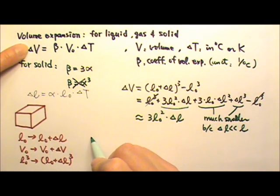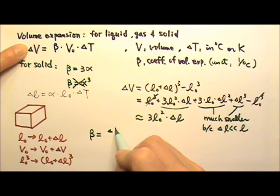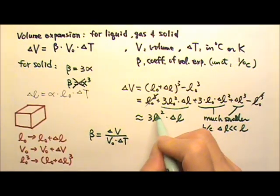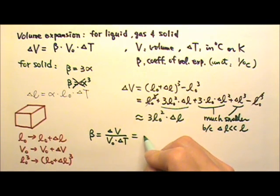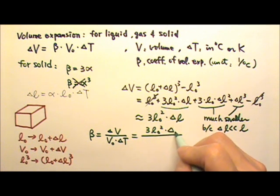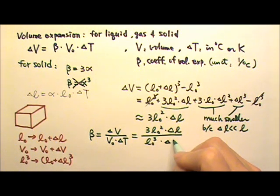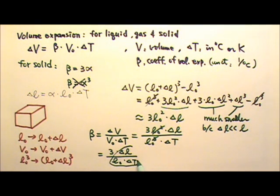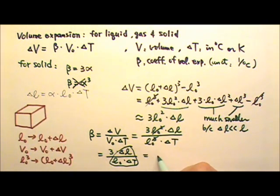From the volume expansion equation, beta equals delta V over V0 times delta T. Plugging in delta V as 3L0² times delta L, and V0 as L0³, the L0² cancels, leaving beta equal to 3 times delta L over L0 times delta T. Since delta L over L0 times delta T is alpha, beta equals 3 times alpha. The reason it is 3 times alpha comes from that factor of 3 in the binomial expansion.